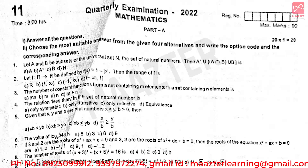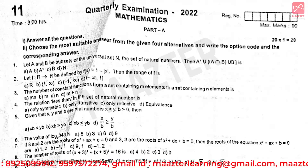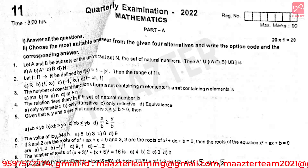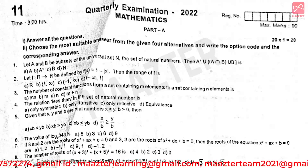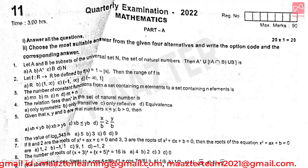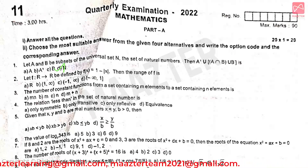First: Let A and B be the subsets of the universal set N, the set of natural numbers. Then A' union (A intersection B) union B is. Answer is option D.